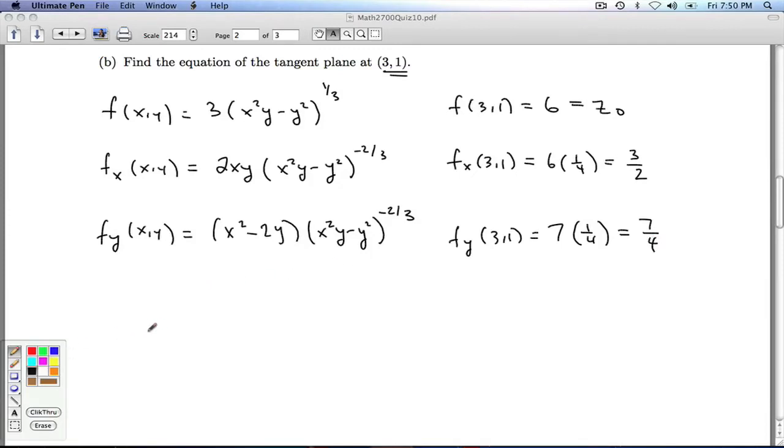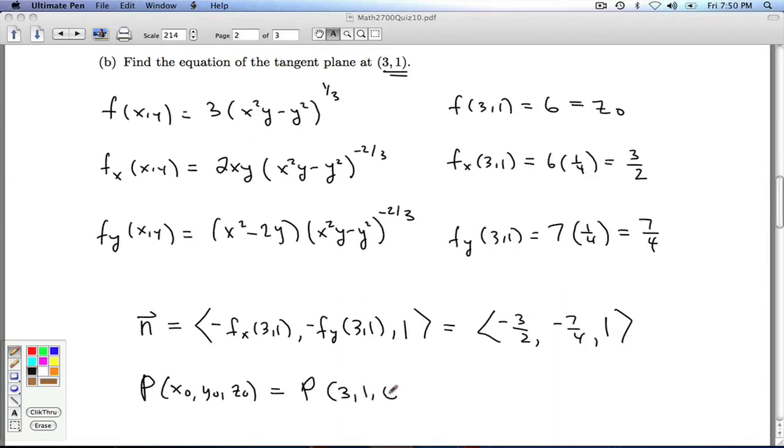So I'm all set now for my tangent plane. I've got my normal vector n is negative fx at 3, 1, negative fy at 3, 1, 1. So I get negative 3 halves, negative 7 fourths, 1. And the point, x naught, y naught, z naught, that's the point P, is 3, 1, 6. So with the normal vector and the point, I have everything I need to write my tangent plane.